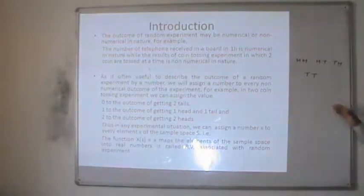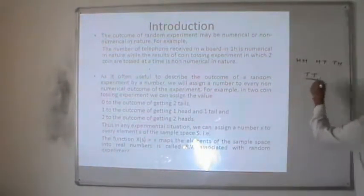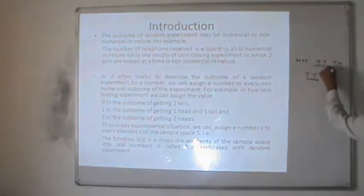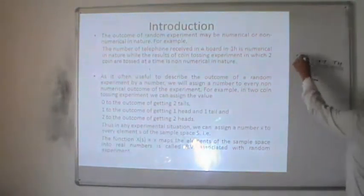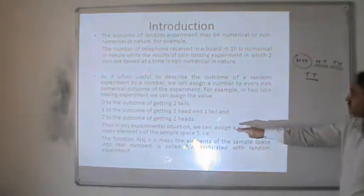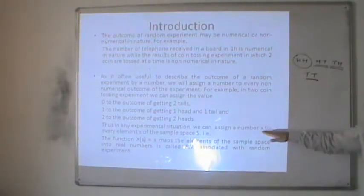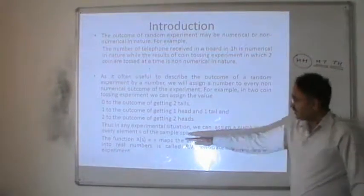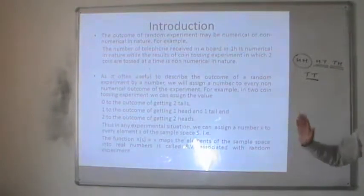For example, in tossing of two coins, we can assign the value 0 to the outcome of getting two tails, 1 to the outcome of getting one head and one tail, and 2 to the outcome of getting two heads. Thus in any experimental situation we can assign a number x to every element s of the sample space, where x(s) equals x maps the elements of the sample space into real numbers.